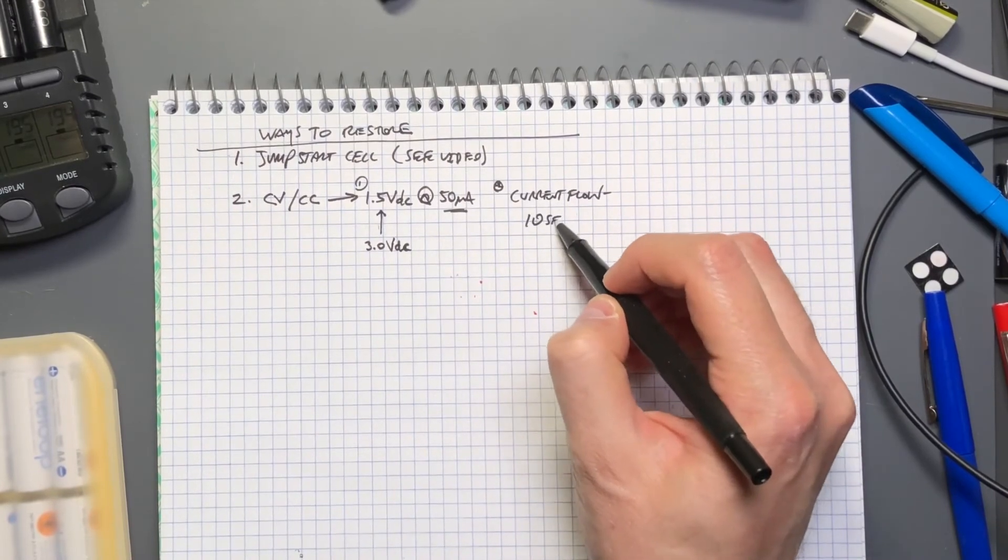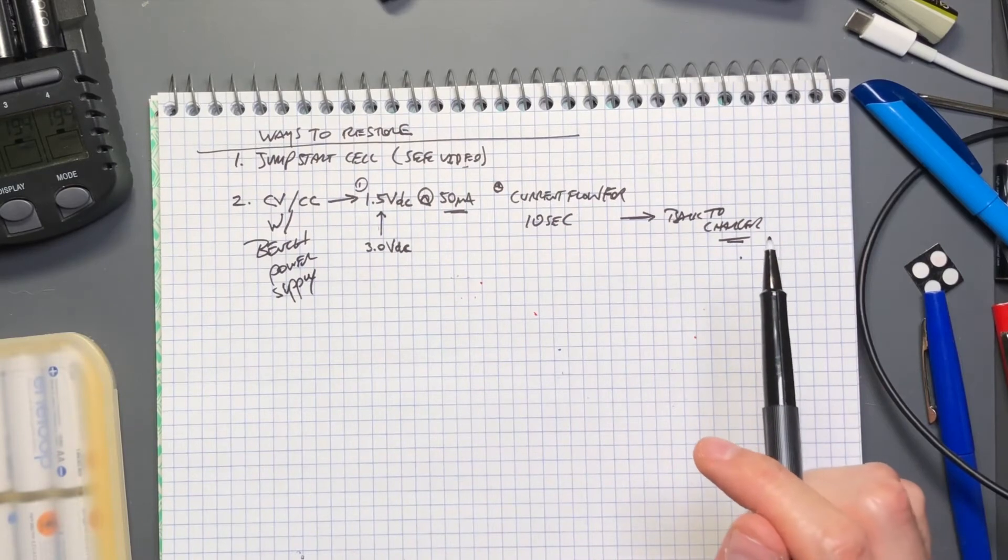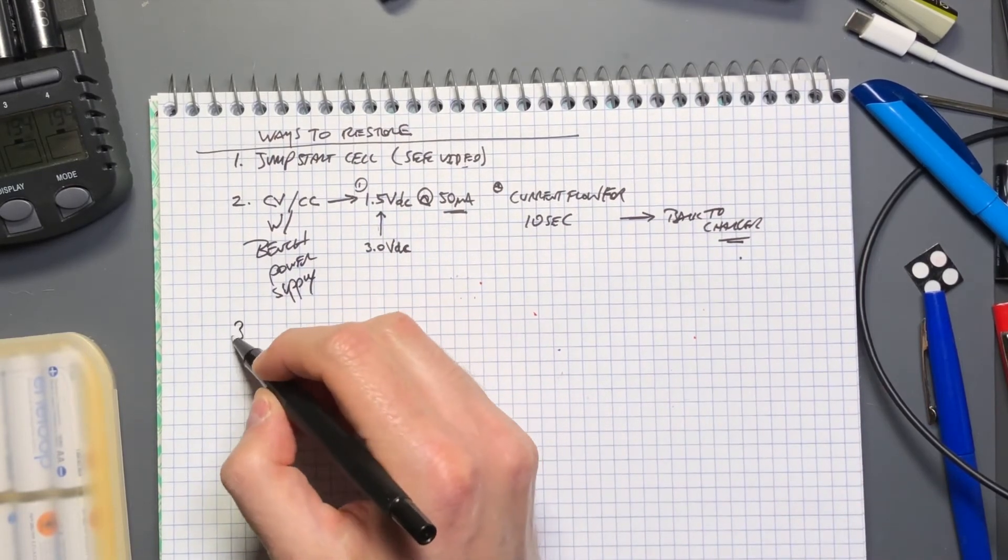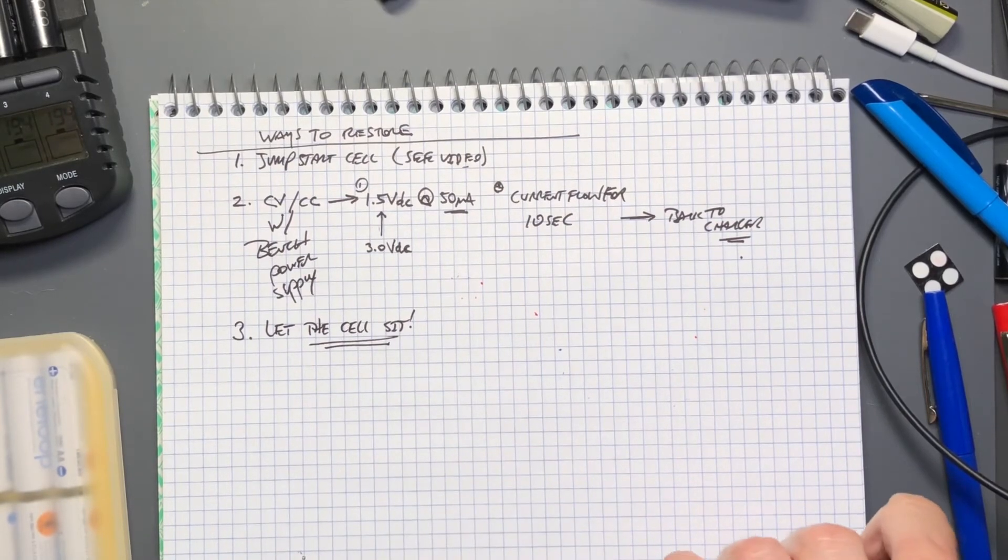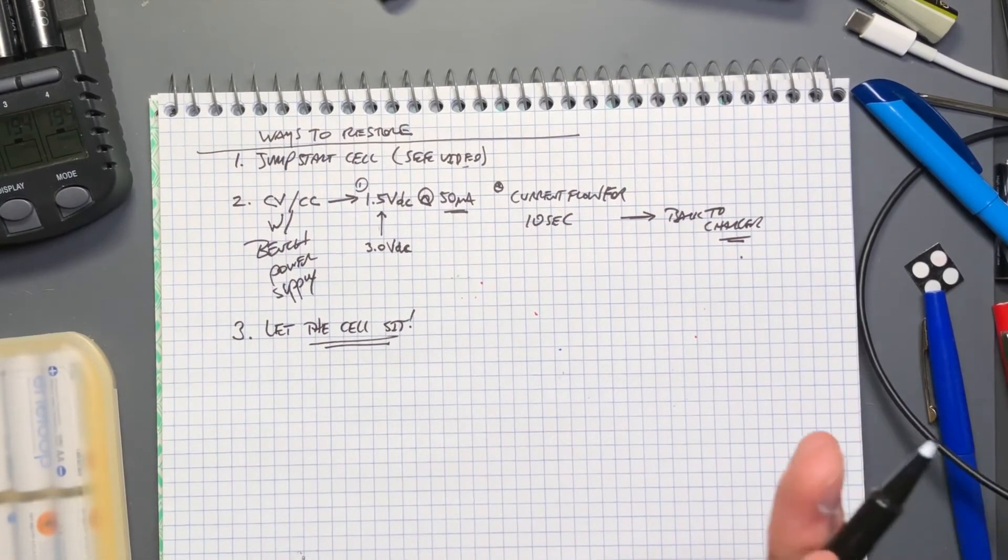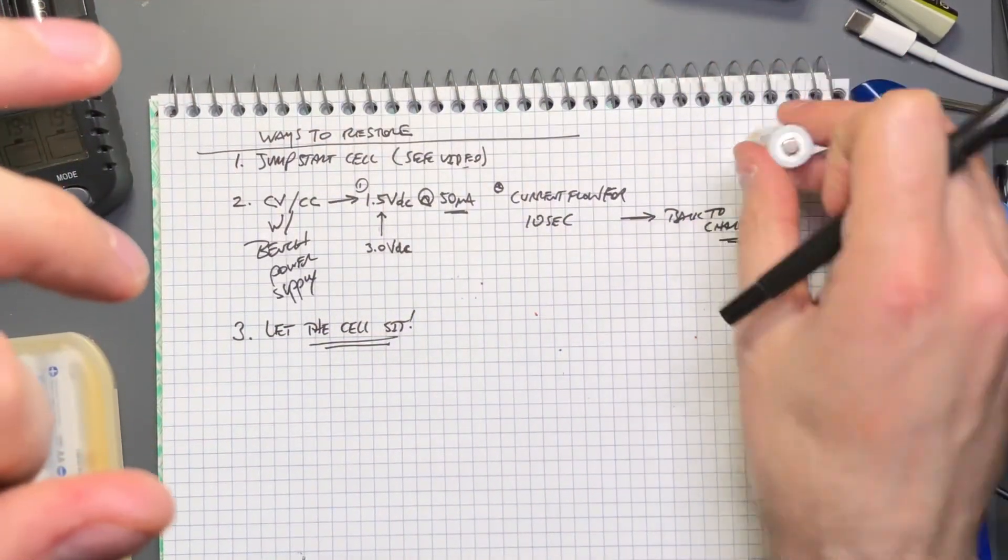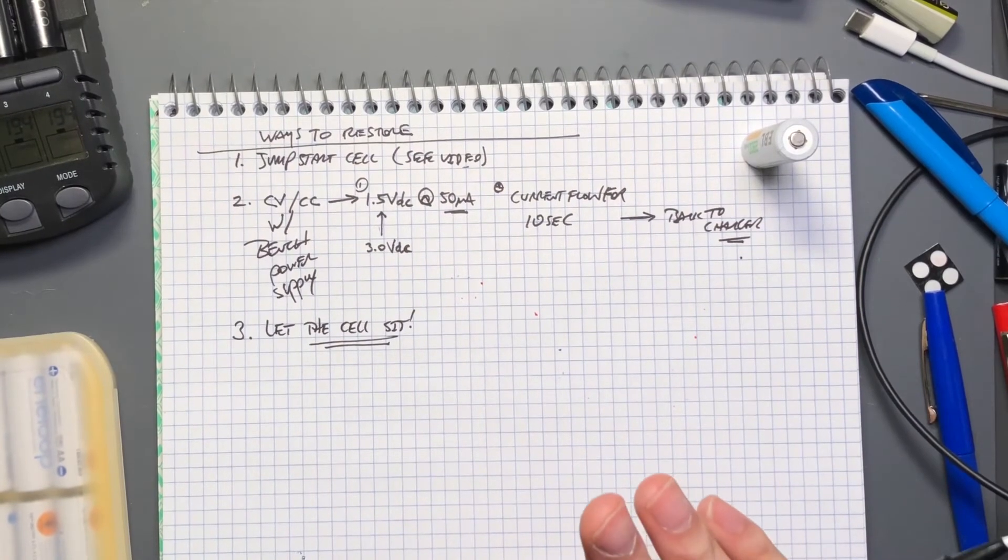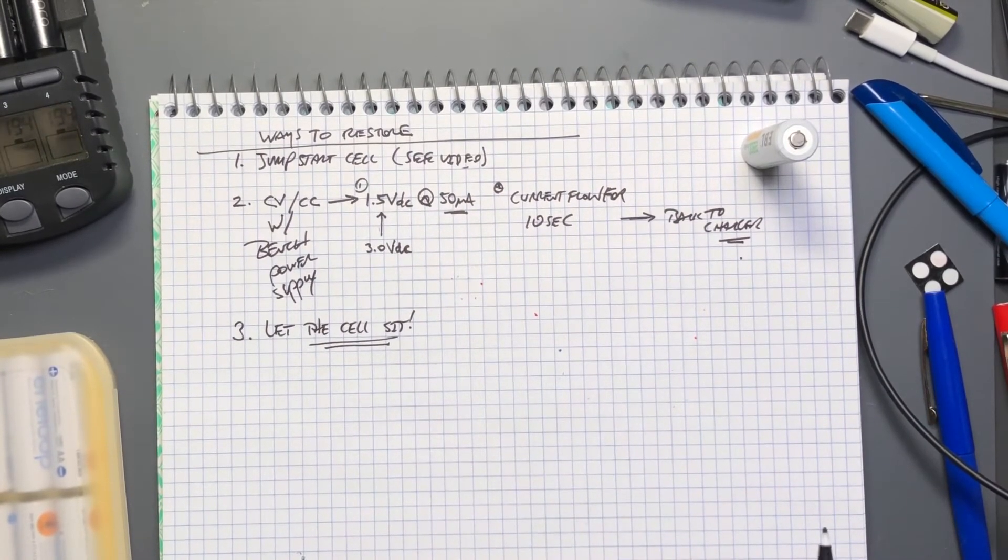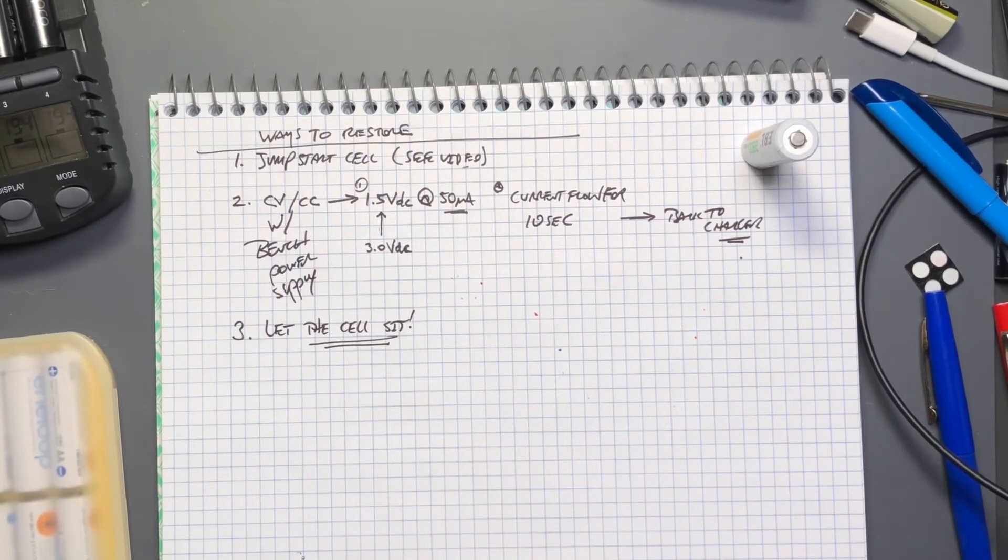The other option is do nothing. Let the cell sit. Take it out of whatever it was in and let it sit just open circuit. Don't put it in a charger, don't put it in anything else. Let it sit out preferably in a cool environment. Don't put it in the freezer or refrigerator. Just let it sit with nothing connected to it.